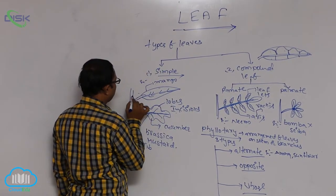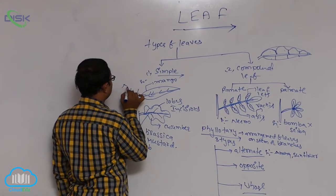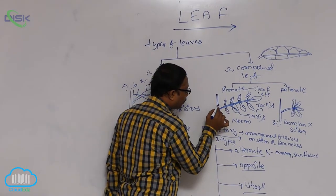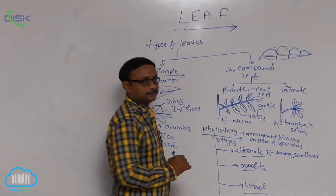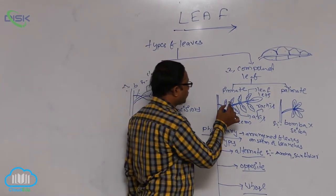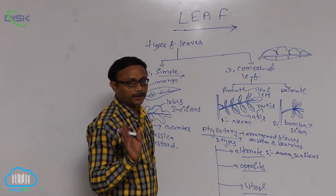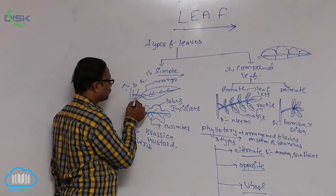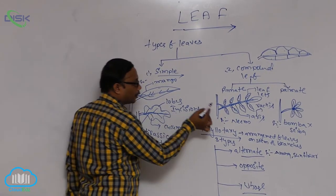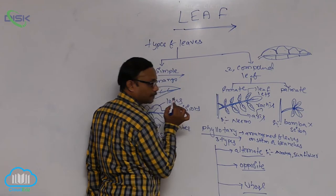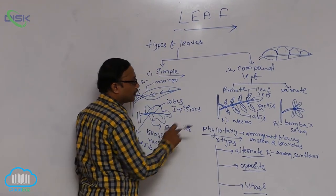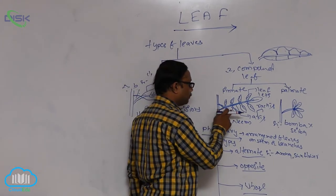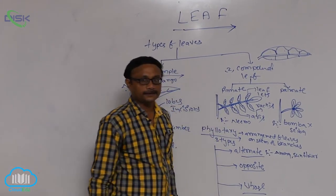An important distinguishing point: a simple leaf has an axillary bud, and a compound leaf also has an axillary bud at the base of the petiole. However, the individual leaflets of a compound leaf do not have axils or axillary buds. This is an important point to remember.